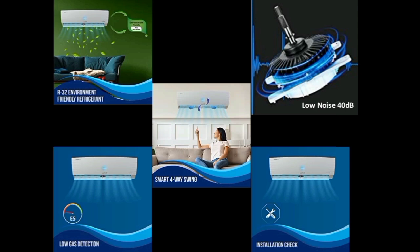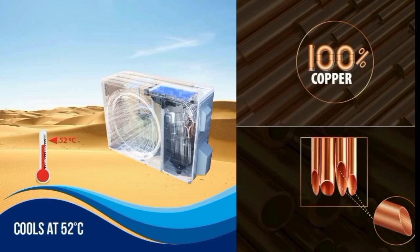The AC has an ECO mode and a low gas detection sensor. If the gas level is low, the low gas sensor will indicate this, reminding you to service the AC. The AC also operates at a low noise level. It can function in ambient temperatures up to 52 degrees Celsius, making it suitable for hot climates.